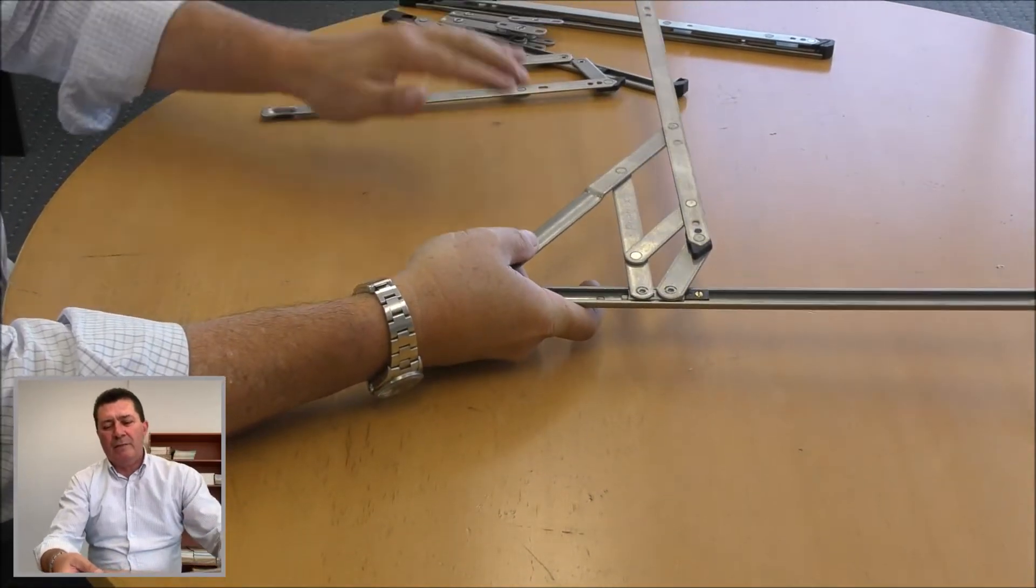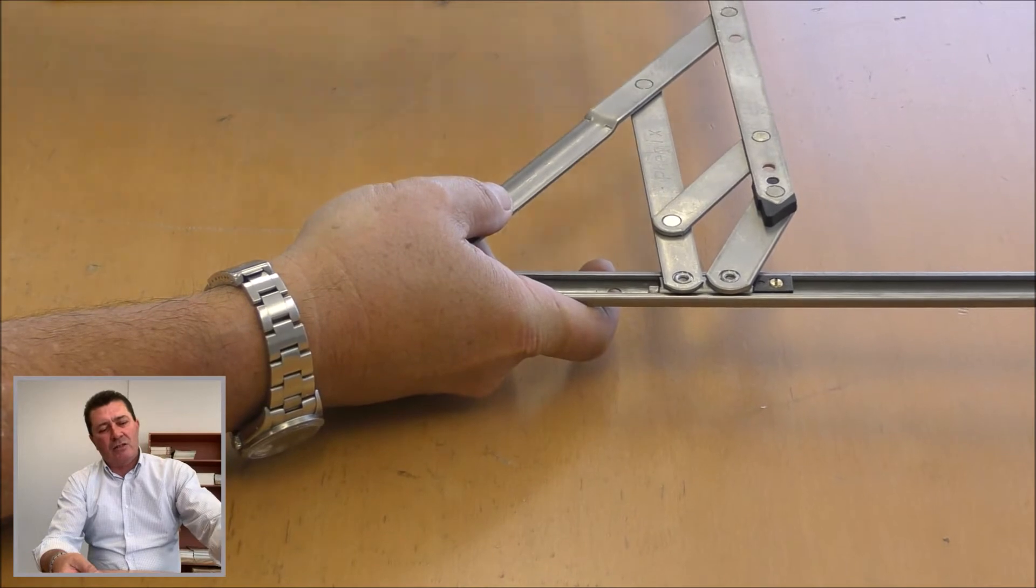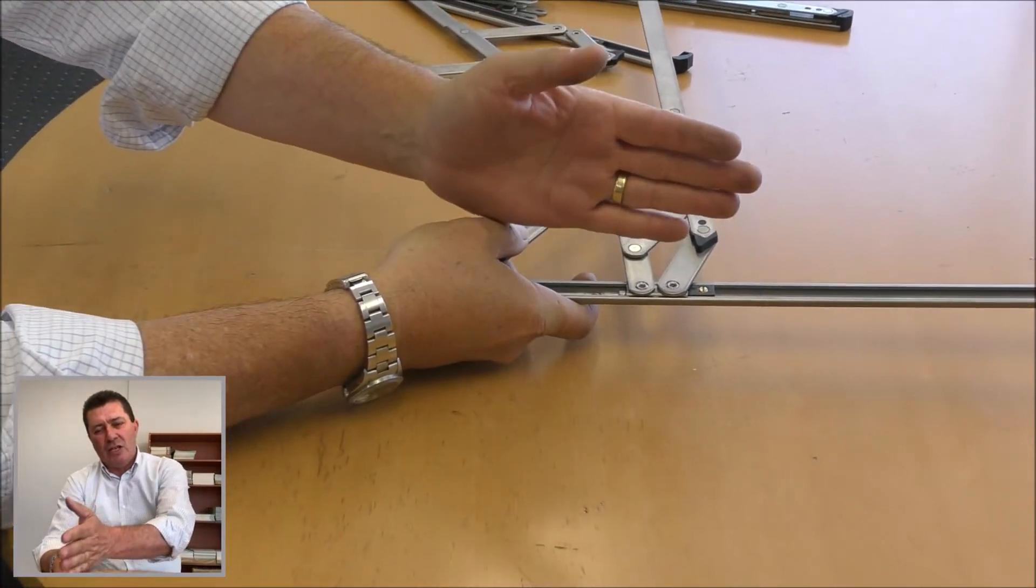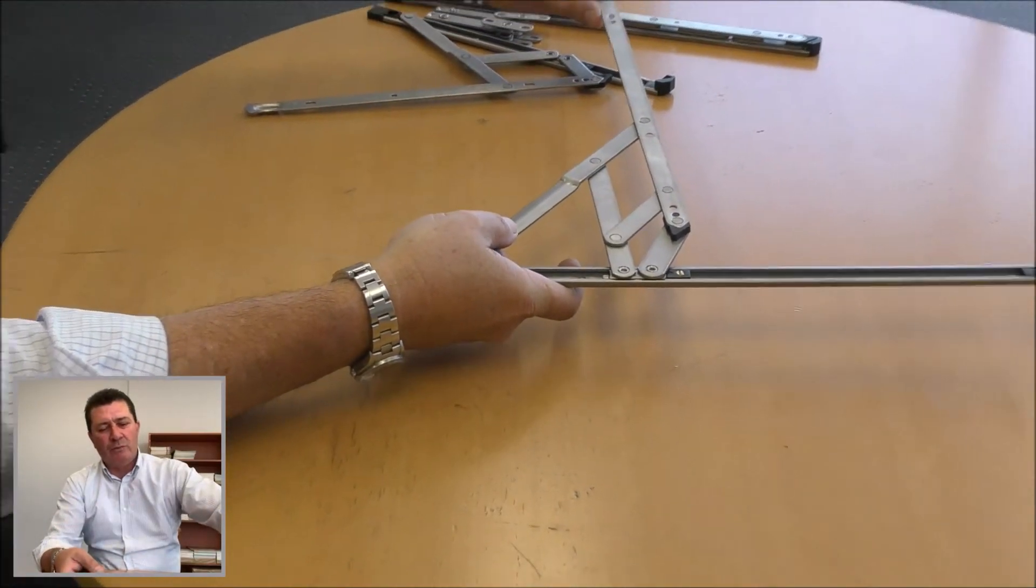As you can see here, where the sash is attached to this sash plate, the weight of the sash is away from the frame, so it's not supported by the frame and will over time drop.